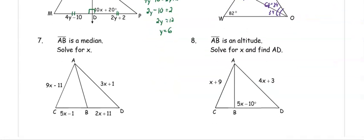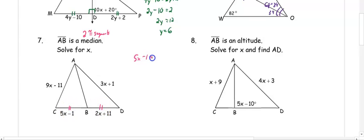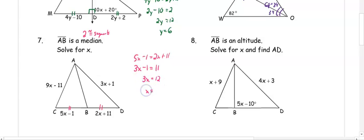In number seven, AB is a median. A median creates two congruent segments. So we have 5X minus 1 equal to 2X plus 11. Subtracting 2X from both sides gives 3X minus 1 equals 11. Adding 1 to both sides gives 3X equals 12, so X equals 4.